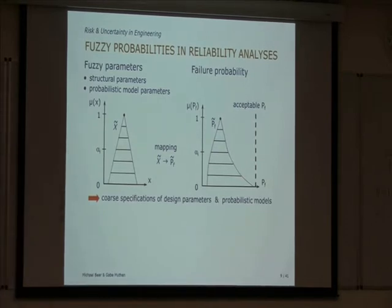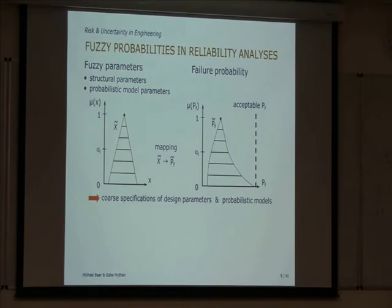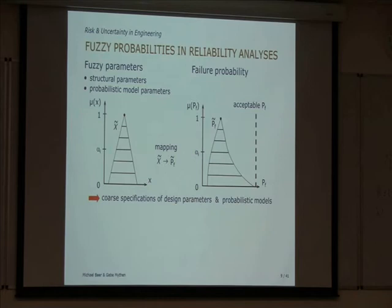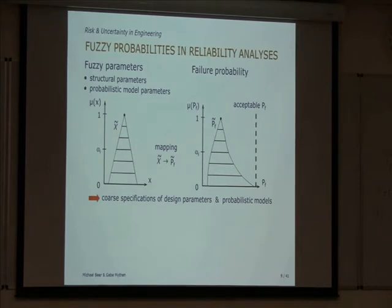We come to the interpretation. Say we have a structural analysis where we analyze a structure and want to find its reliability. Input parameters can be geometry, load, and so on. What we find as the result is the failure probability — how likely it is that the structure fails. Of course, what we want is for the structure not to fail. This cannot be guaranteed absolutely; there is always a remaining probability of structural failure. But we can keep this small and on an acceptable level. To find this acceptable level, psychology and social sciences come in, because in any way we have to quantify the value of human life.